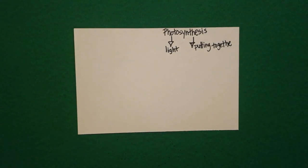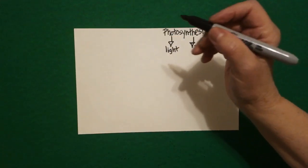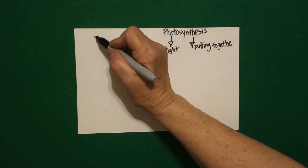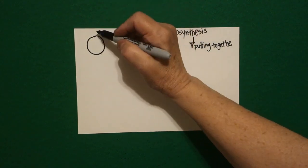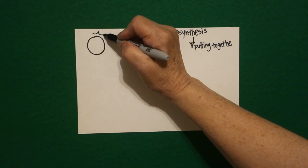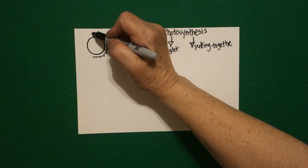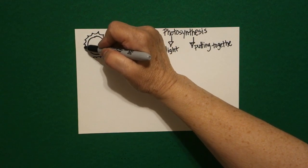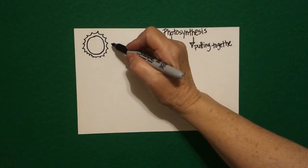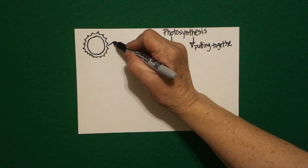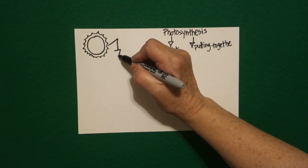First we're going to draw and then we're going to label. Come over here to the left-hand side and put a dot. From that dot we're going to draw a circle — right above the dot, draw a curved line all the way around and down, come back up to the top, curved lines, connect. Now we're going to draw a straight line out, straight line down, and a triangle. And over here at the bottom, draw a straight line down and a triangle.